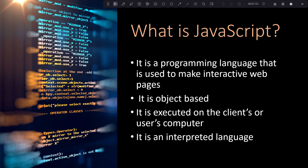JavaScript is an interpreted language. If you remember from compilers and translators, you know that you have two types of translators: compilers and interpreters. So JavaScript is an interpreted language, which means code will be executed and interpreted line by line.